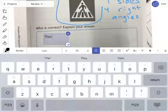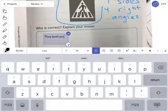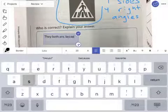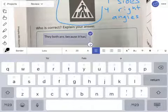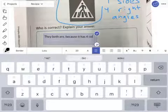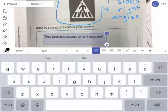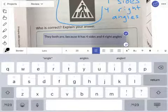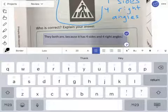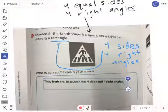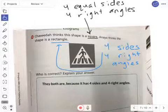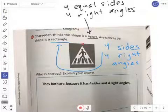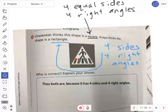Who's correct? They both are, because it has four sides and four right angles. As long as that shape has four sides and four right angles, you can call that a rectangle too. Typically we know of rectangles...